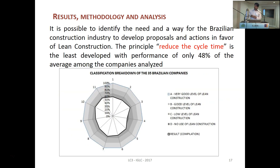Here you can see the 11 principles of Lean Construction and the total results of my research in the 35 different construction companies. From this graph, the principle of reducing cycle time is the least developed, with a performance of only 48% average among the companies analyzed. With this, it's possible to identify the needs and directions for the Brazilian construction industry to develop proposals and actions in favor of Lean Construction.